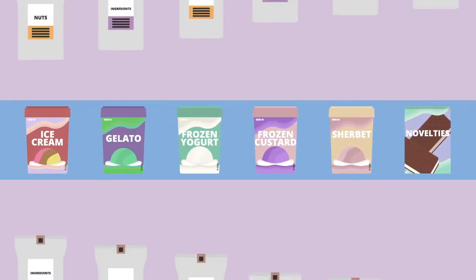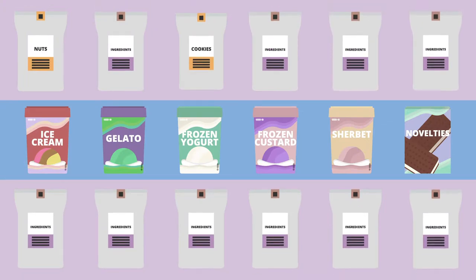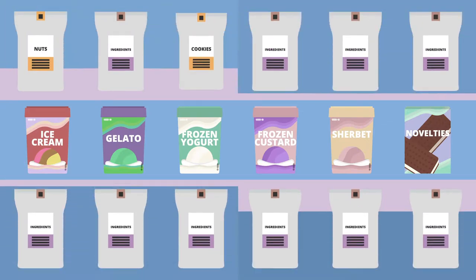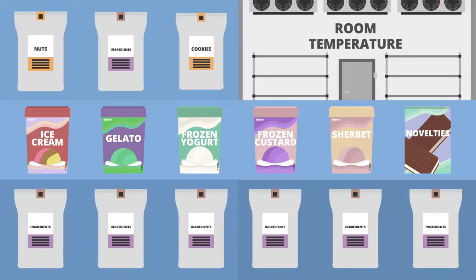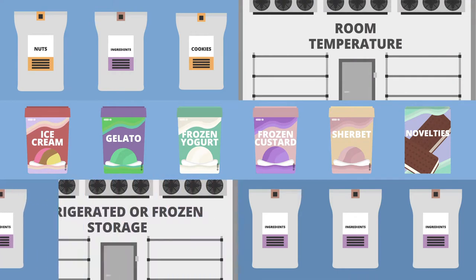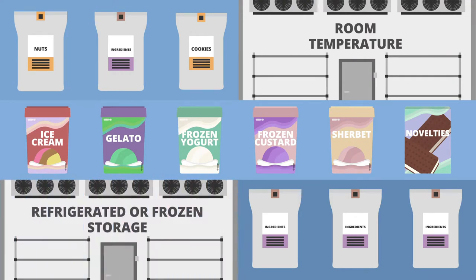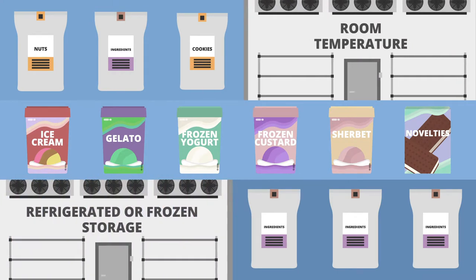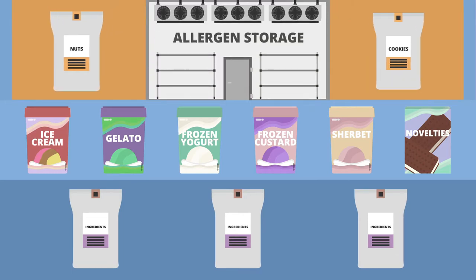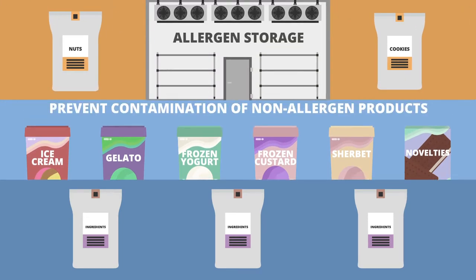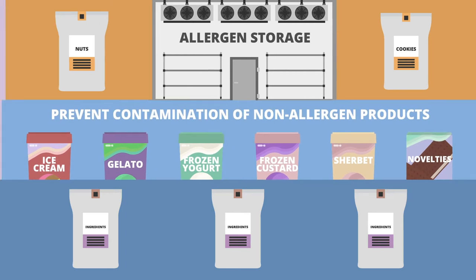When thinking about your product line, consider the number and type of ingredients you need to keep on inventory. Some ingredients are stored at room temperature, and others need refrigerated or frozen storage. Ingredients that contain allergens, such as nuts and cookie pieces, require an allergen storage and use plan to prevent contamination of non-allergen products.